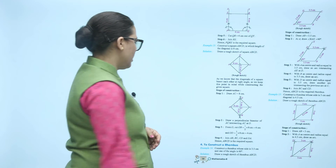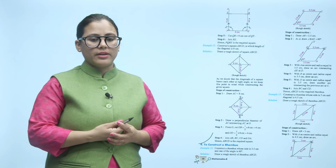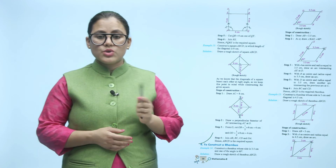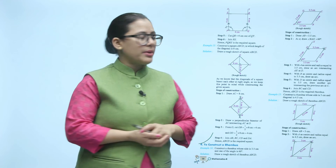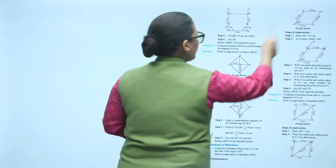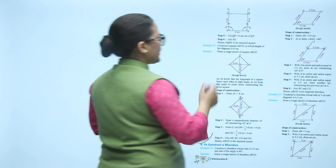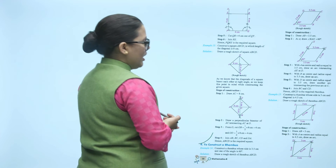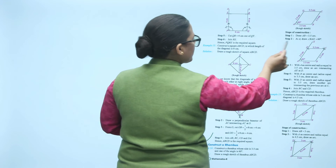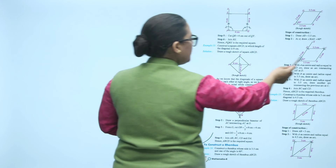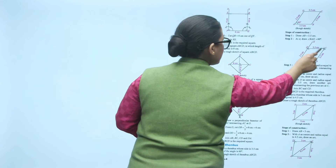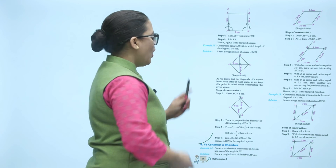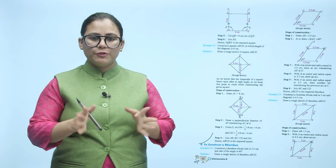Next is to construct a rhombus. In this case, one side is given as 3.5 cm and one of the angles is 60 degrees. Since all four sides of a rhombus are equal to 3.5 cm, first draw AB of 3.5 cm. Make angle A equal to 60 degrees, then take A as center and draw an arc of 3.5 cm, then take B as center and draw an arc of 3.5 cm, then take D as center and draw an arc of 3.5 cm. After joining, you get your rhombus figure.